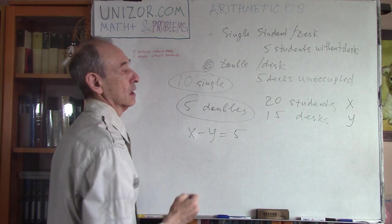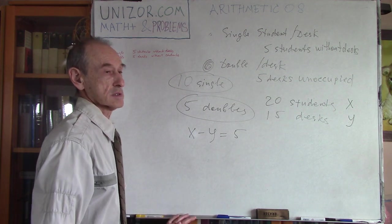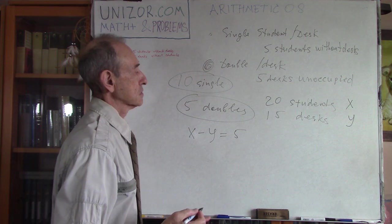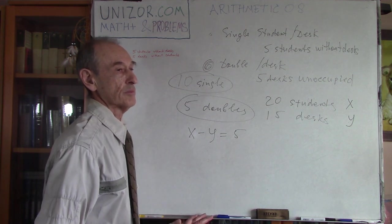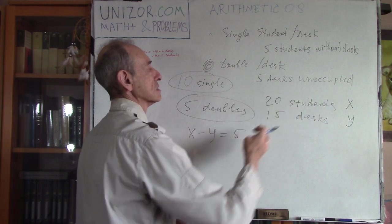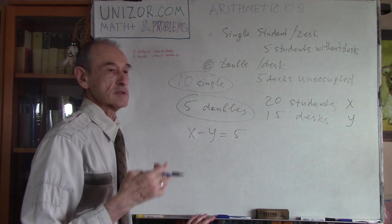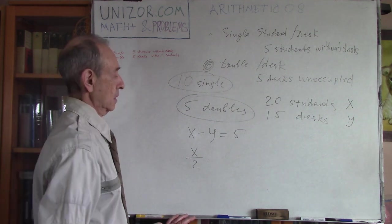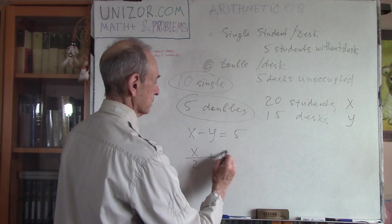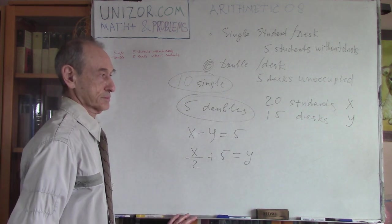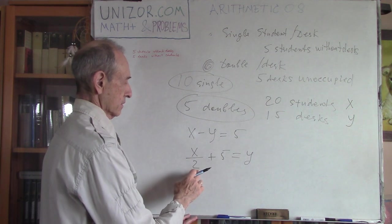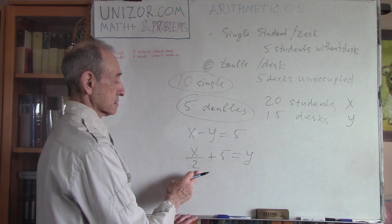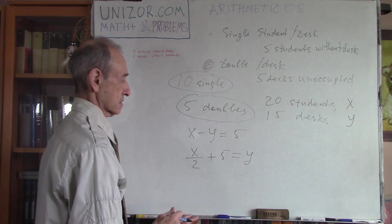Right? Now, if you have doubles and five desks are unoccupied, what does it mean from the equation standpoint? Well, if you have x students, now, since they are double, they occupy x divided by two desks, right? Now, if you will add five unoccupied, you will have the total number of desks. So x/2 plus five empty, that gives you total number of desks.